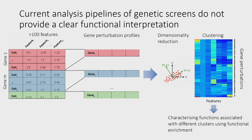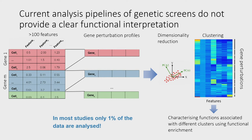It turns out that this pipeline doesn't work very well in practice. In reality, it's very, very difficult to interpret the resulting clusters — a problem I faced myself during my PhD studies. What happens is that it's really difficult to understand what a cluster means in terms of function, so most scientists will go back and focus on one or two features they really understand, do a hit analysis, and discard the rest of the data. So 99% of the data in these screens are often discarded, and we are not learning from it.